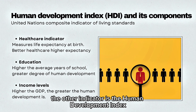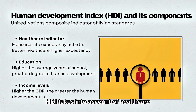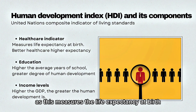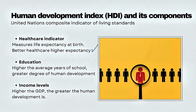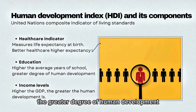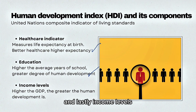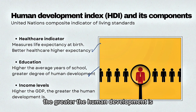The other indicator is the Human Development Index, HDI, and its components. HDI takes into account healthcare, as this measures the life expectancy at birth. Better healthcare leads to higher life expectancy. Secondly, we have education. According to the HDI, the higher the average years of schooling, the greater the degree of human development. And lastly, income levels — the higher the GDP of an economy, the greater the human development.